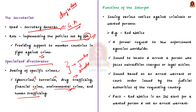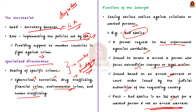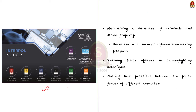Now let us see some important functions performed by Interpol. Firstly, Interpol issues various notices against criminals or wanted persons. One such example is the Red Notice, which is a request to law enforcement agencies worldwide — issued by Interpol to locate and arrest a person who faces extradition charges or legal action. The Red Notice is issued based on an arrest warrant or court order issued by a judicial authority of a member country. Note that the Red Notice is an international alert for a wanted person, but it is not an arrest warrant. The other notices of Interpol are displayed here.